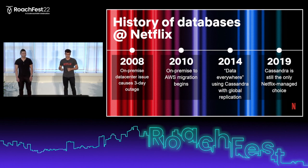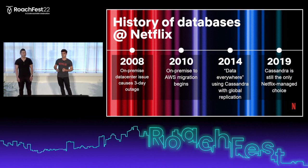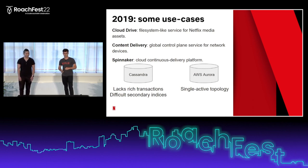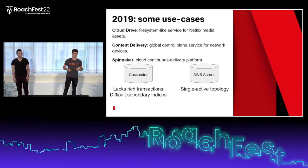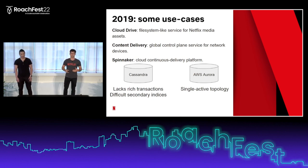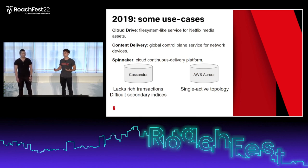Fast forward to late 2018 into 2019, Cassandra was still kind of the only solution at Netflix. We were on AWS, so we had AWS database services available, but we were really only providing Cassandra as a managed solution. That was a problem for some use cases. Netflix use cases for databases were also growing very rapidly — in 2016 we started producing our own movies, so a studio side of the business was developing. Some of these use cases were a cloud drive service, which is like a file system for media assets needed by the studio side.